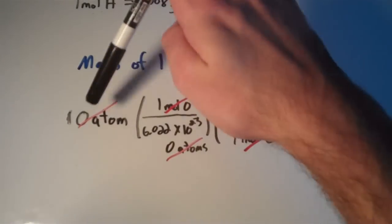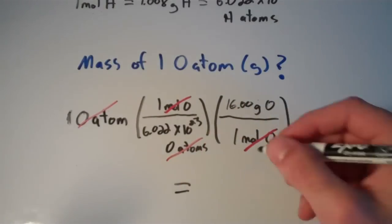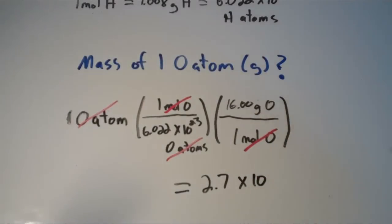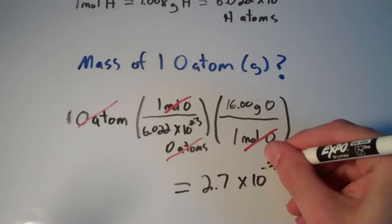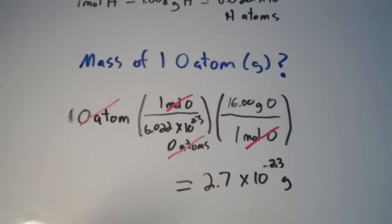And if you multiply everything on the top and divide by everything on the bottom, you will get about 2.7 times 10 to the negative 23rd grams. So the mass of one oxygen atom is 2.7 times 10 to the negative 23rd grams.